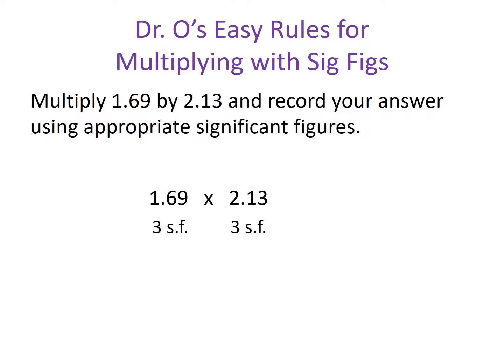Once we multiply to find the surface area, our product is 3.5997, which implies precision to the ten-thousandths — far more precise than either measurement, which are only precise to the hundredths. That level of precision can't be justified, which is why we must round our calculation to reflect the same level of precision as our given values, and why understanding significant figures matters.